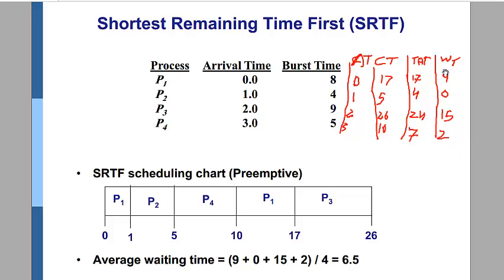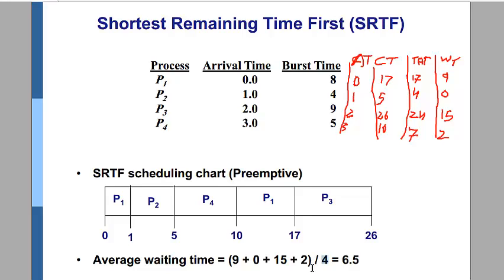To calculate average waiting time, we add all waiting time values and divide by the number of processes: 9 plus 0 plus 15 plus 2, divided by 4. The result is 6.5, which is our average waiting time. For average turnaround time, we do the same procedure — add all turnaround time values and divide by the number of processes.